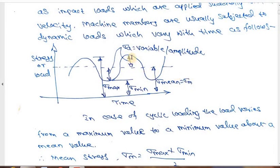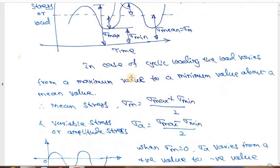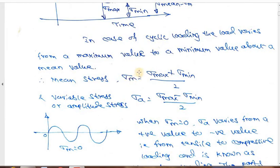Above this mean stress till the maximum, or below the mean stress till the minimum, gives the variable stress, otherwise called amplitude stress. Therefore, from maximum and minimum stresses I can arrive at the mean stress and the variable stress. Mean stress is calculated as sigma_max plus sigma_min divided by 2. Variable or amplitude stress is calculated as sigma_max minus sigma_min divided by 2.